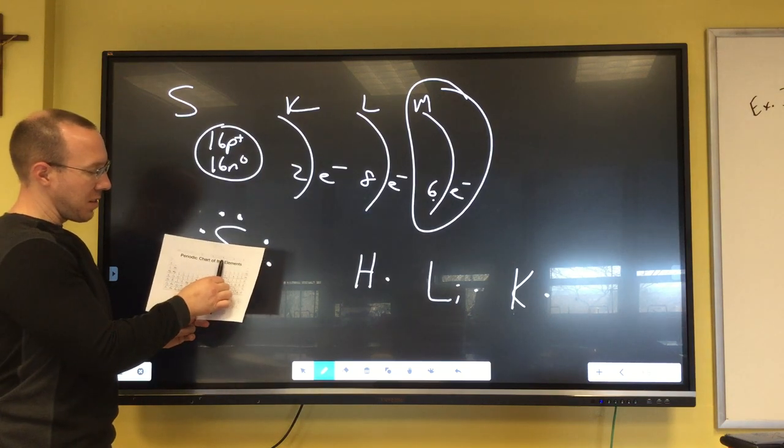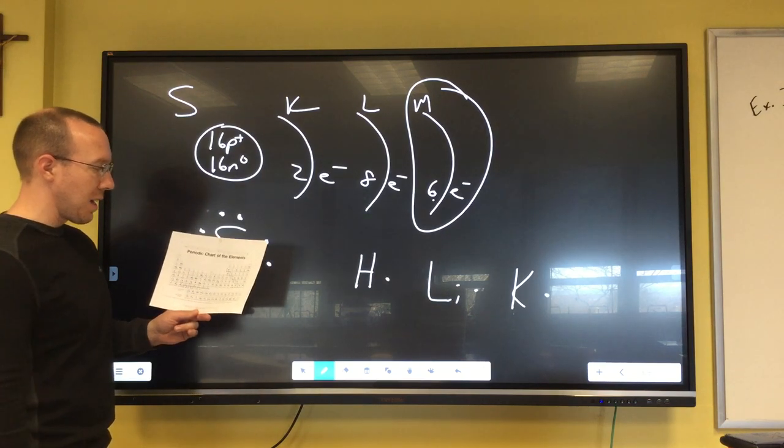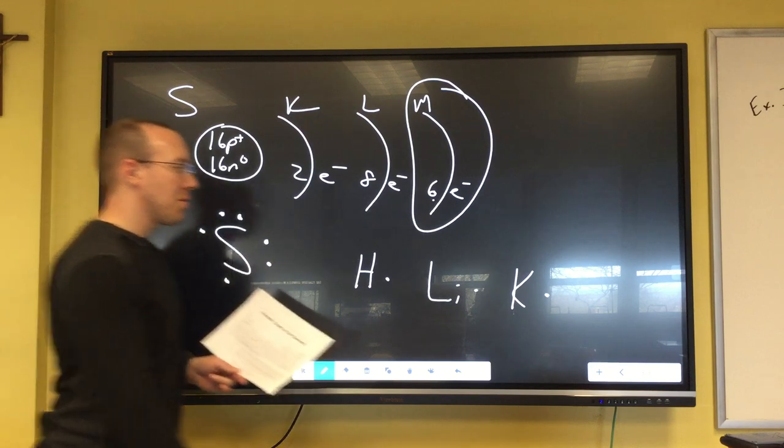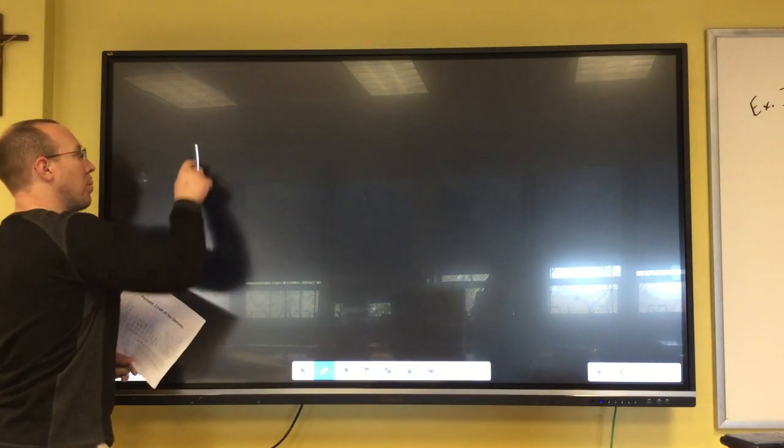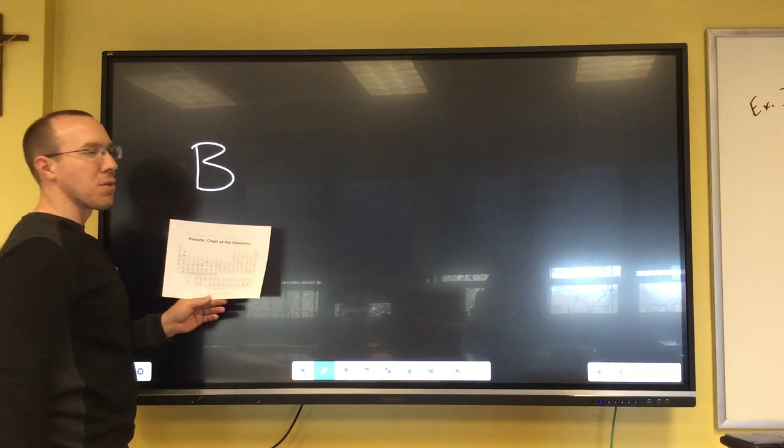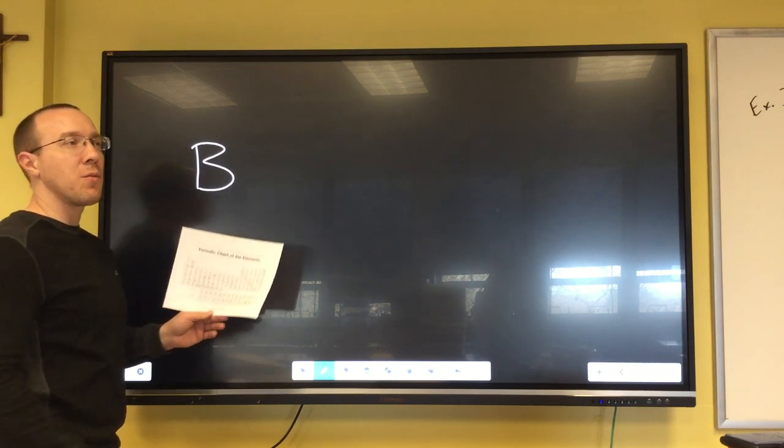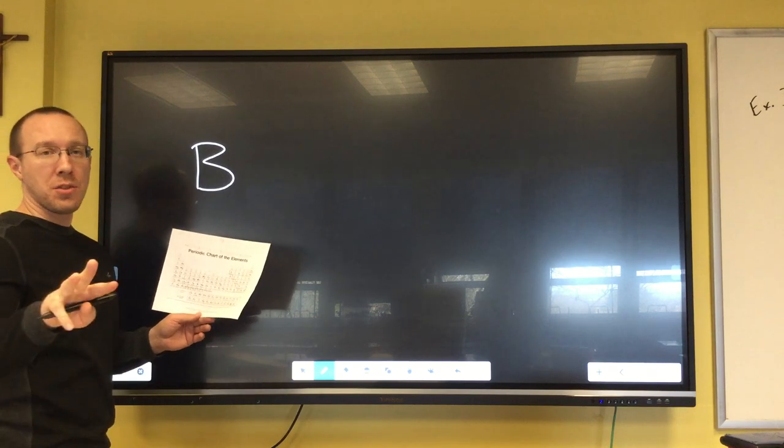Then we skip the transition elements and let's go over to boron, which is an atomic number of five. So boron is technically in the thirteenth group. If we eliminate that one out front, it's three.